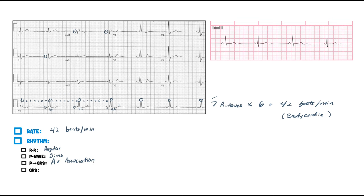QRS complex — what do we look for? We look for it to be wide or narrow. I want us to take a look over here. This is interesting. Let's say it's about the start of that one, and that's about the end of that one right there. So these dots are representing a box — that's one, that's two, that's three.